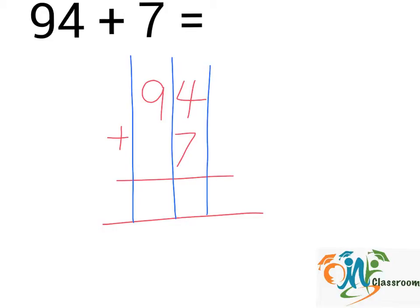Next, we will add up the numbers in each column from right to left. 4 plus 7. This will give us 11.